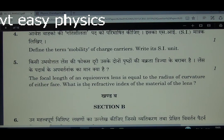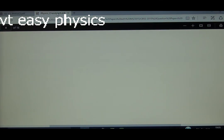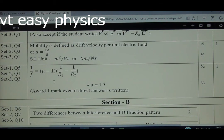Question number 5: The focal length of an equiconvex lens is equal to the radius of curvature of either face. What is the refractive index of the material of the lens?